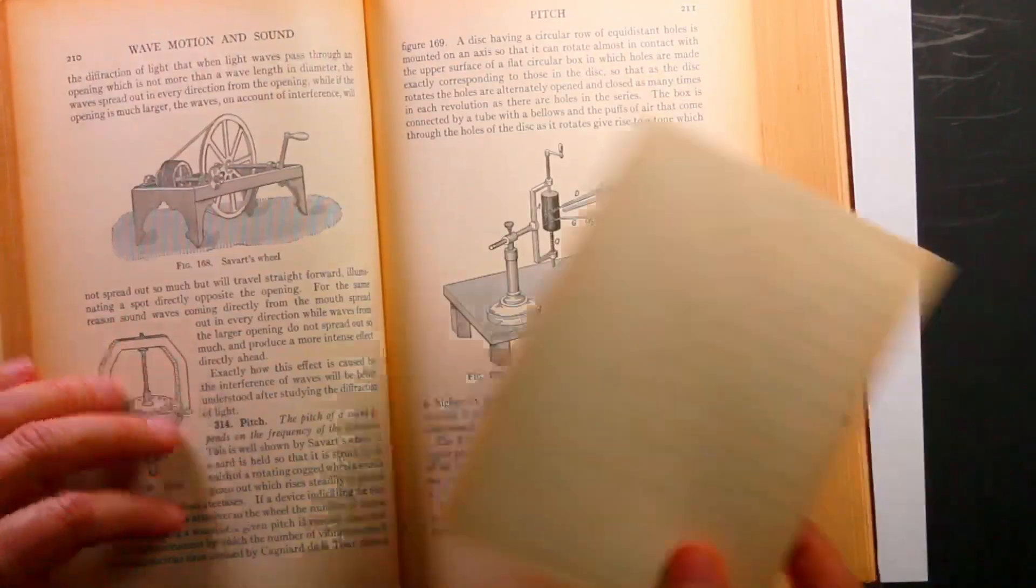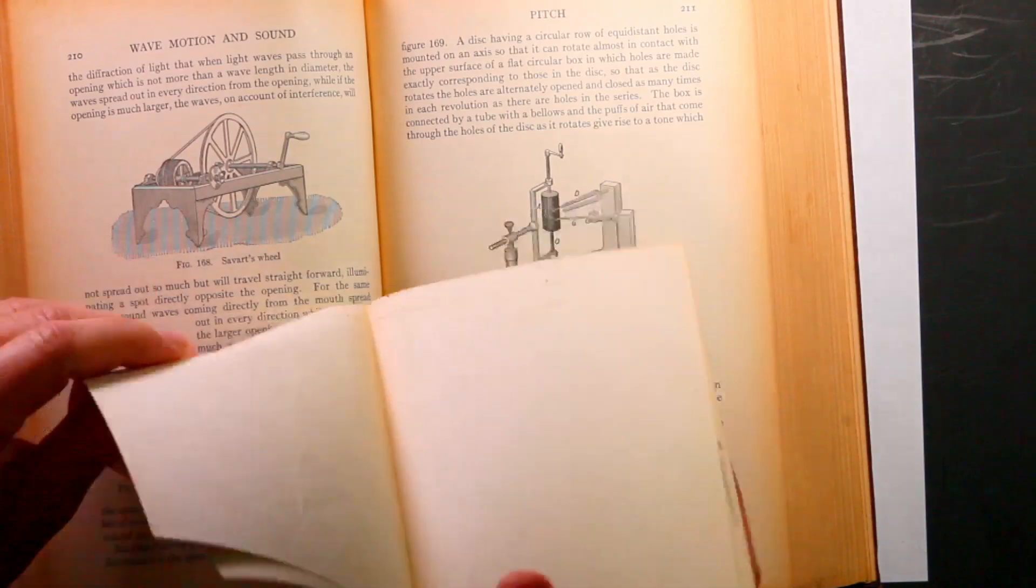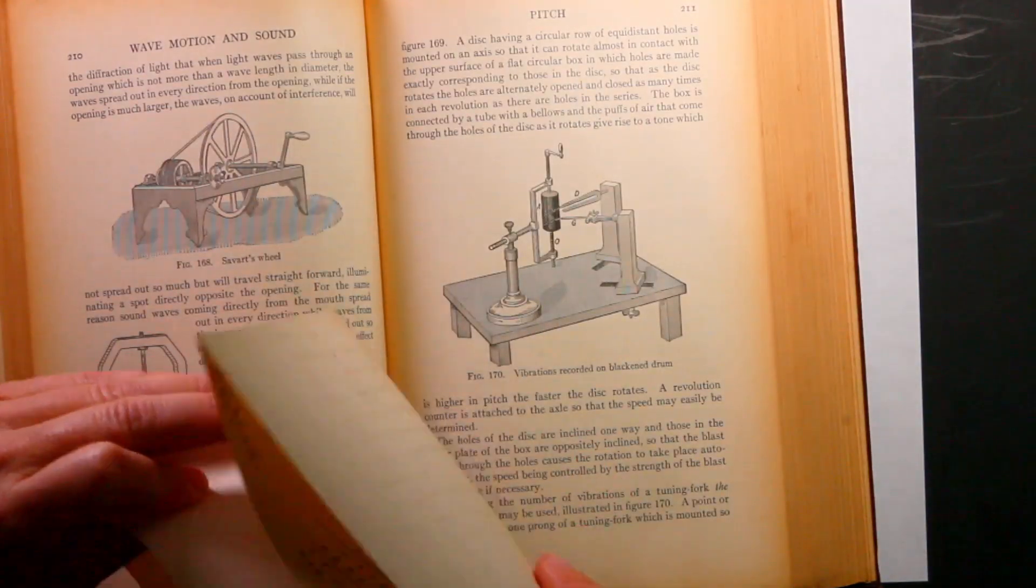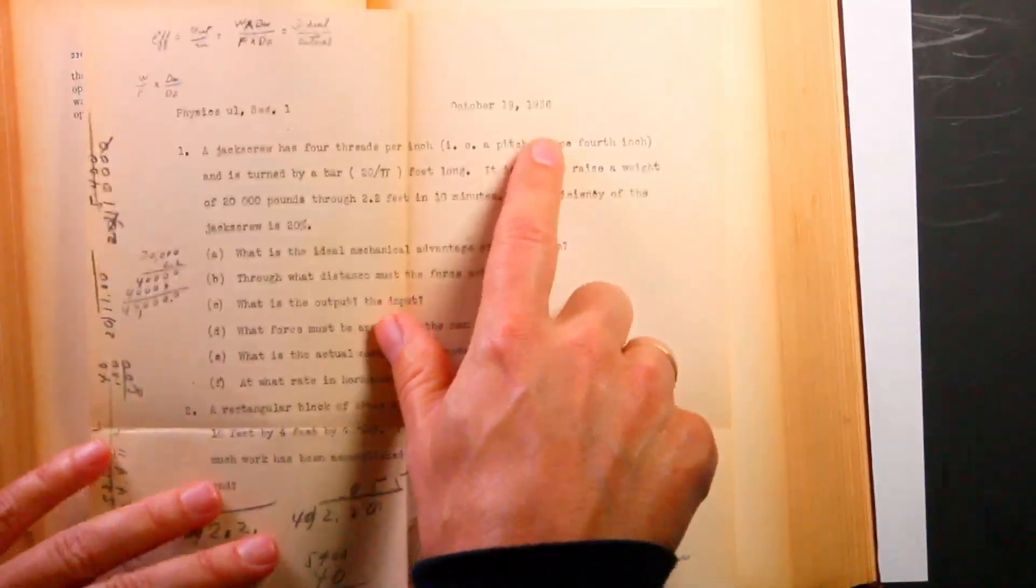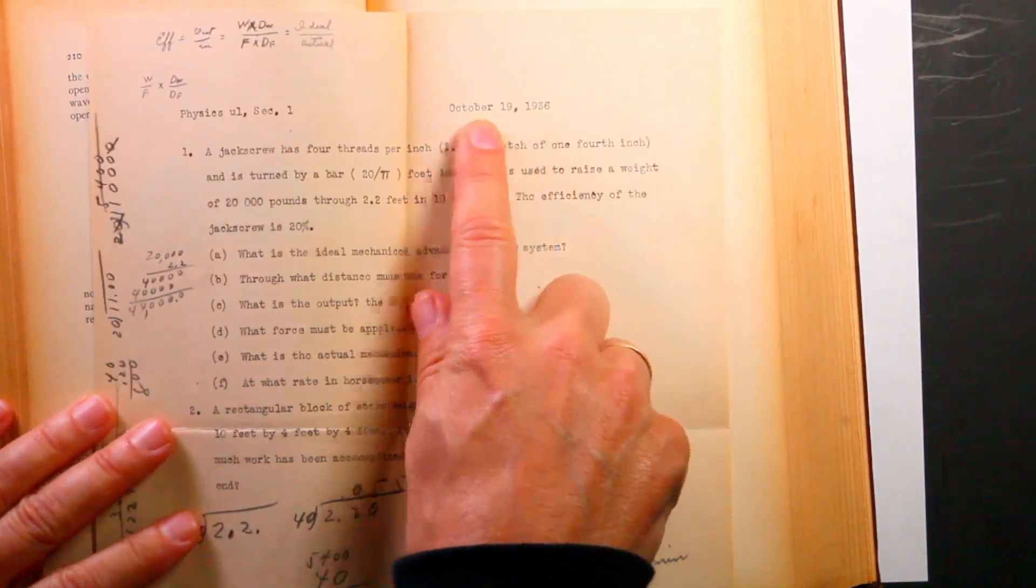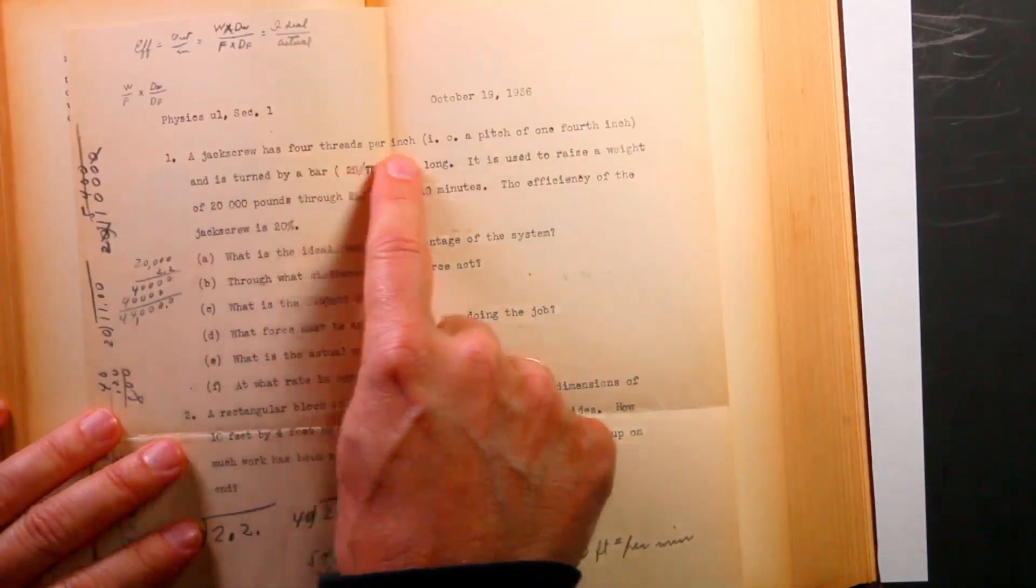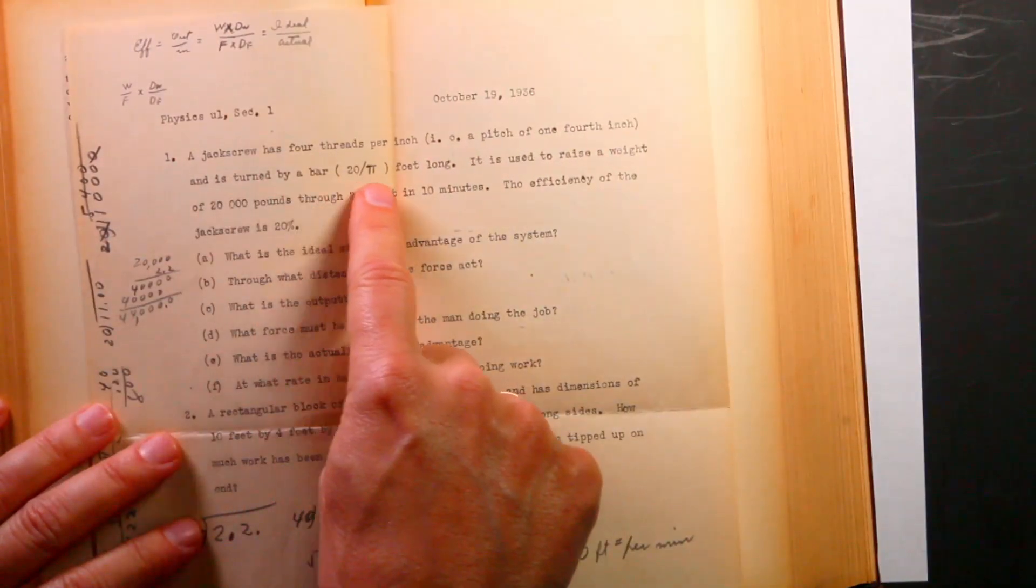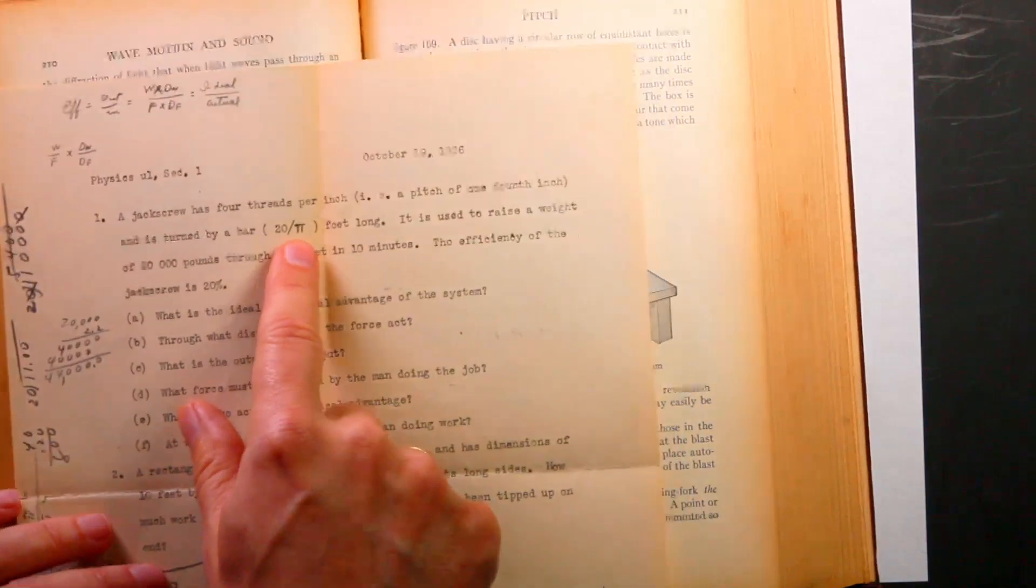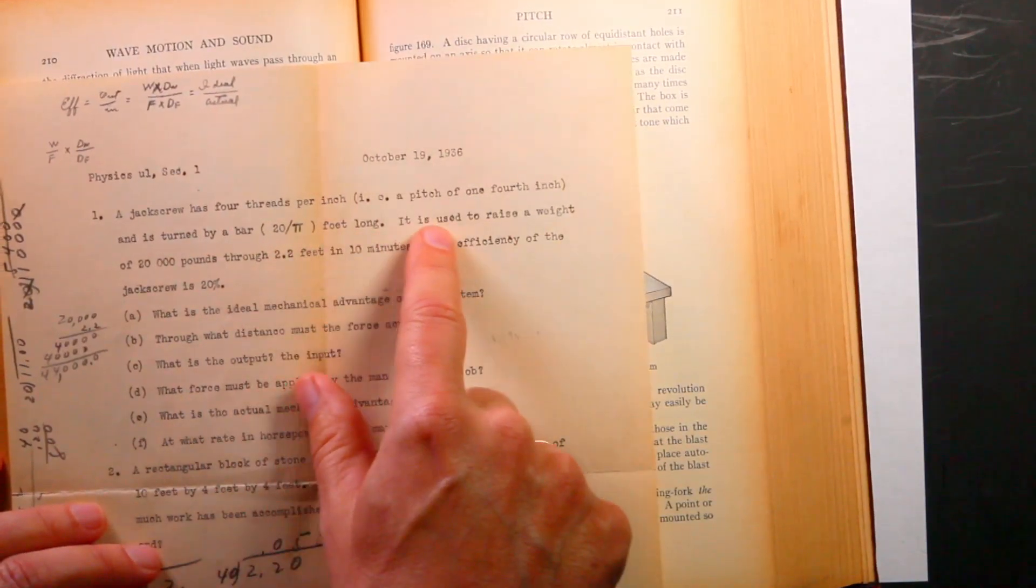But this is what I wanted to show you. I found this in here. I don't know where I got this book. I mean, I know my dad took physics and he had some old books. This could be my father's. No, it couldn't because it's 1936. October 19th. This is a homework problem set. A jack screw has four threads per inch, a pitch of one fourth inch. And it's turned by a bar 20 over pi. Notice it looks like they drew in pi manually. Because they typed this.